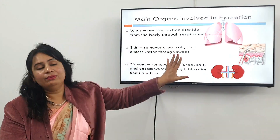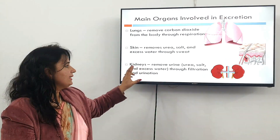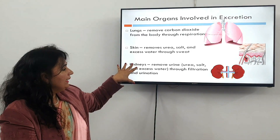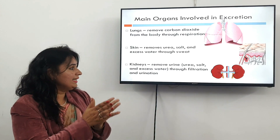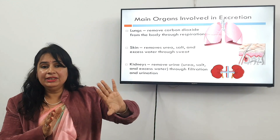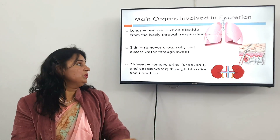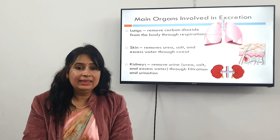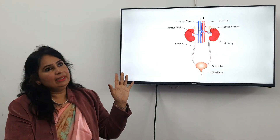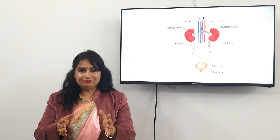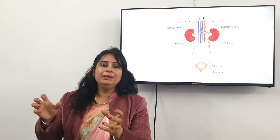The third and most important part of the excretion system are the kidneys. The kidneys remove urine, which contains urea, salt, and excess water, through filtration. Urea and uric acid are quite harmful for the body and should be removed. There is a myth that urea is produced in the kidneys — no, this is a myth. Urea is not produced by the kidneys.